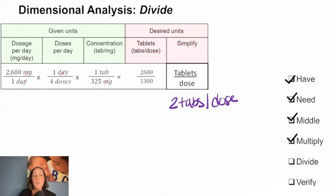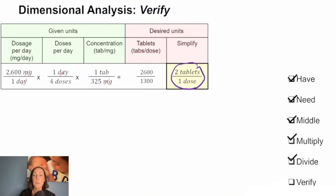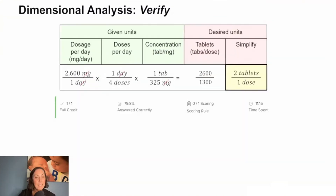The last step is always to verify. We need to make sure our math makes sense and that we're giving the correct dose. We're not getting some crazy number like 2.3, and we're not giving the client 15 tablets. We plug the numbers back in to confirm everything equals out. Two tabs per dose is our whole number — no rounding necessary. So our answer is two.